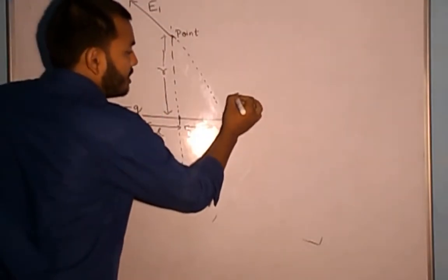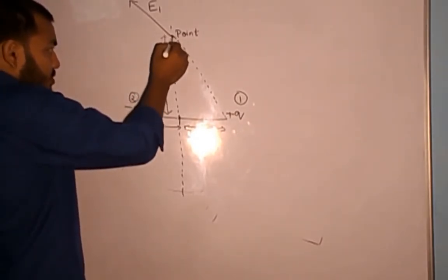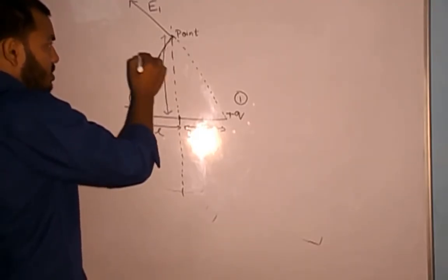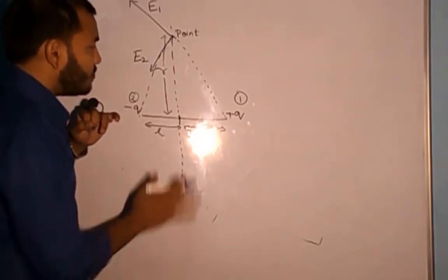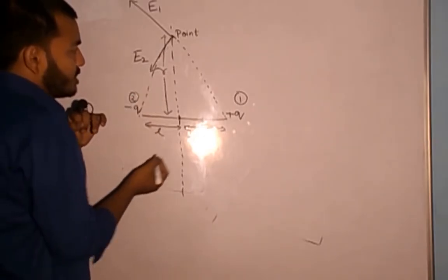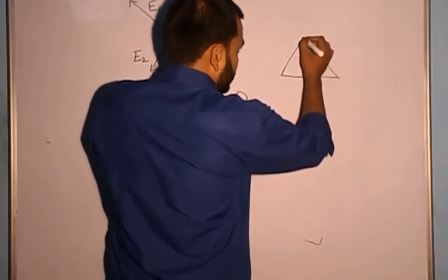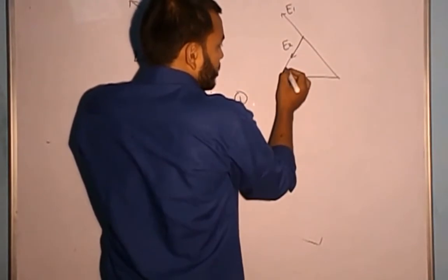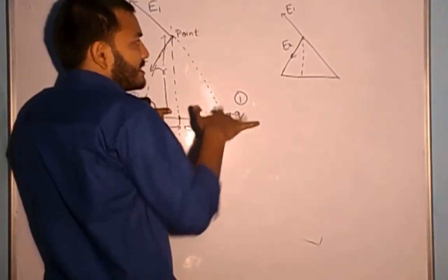I name the positive charge as charge one and the negative charge as charge two. The electric field due to a negative charge is always directed towards the charge. So E1 points away from the positive charge and E2 points towards the negative charge. This is the scenario — E1 and E2 are shown in the diagram.